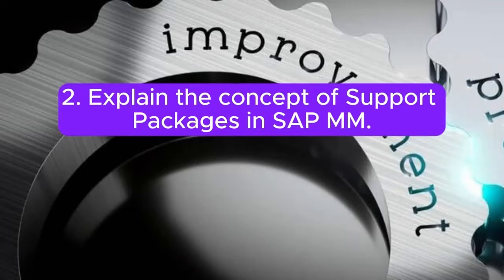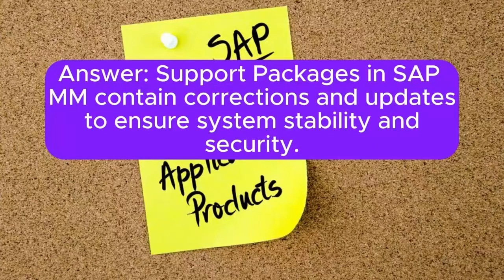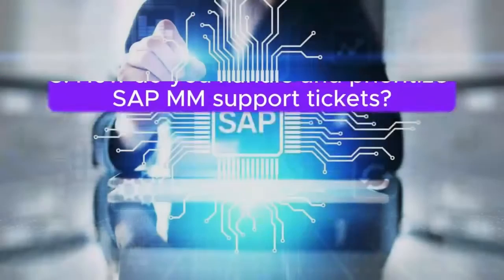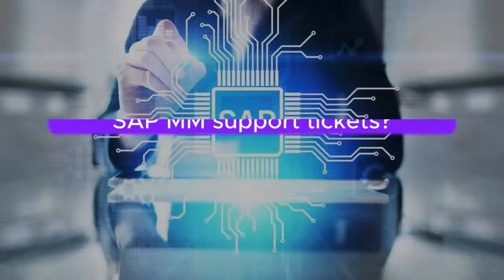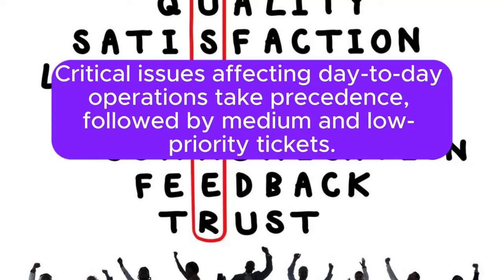Question 2: Explain the concept of support packages in SAP MM. Support packages in SAP MM contain corrections and updates to ensure system stability and security. They are regularly released by SAP and their implementation is crucial for system maintenance. Question 3: How do you handle and prioritize SAP MM support tickets? Support tickets are prioritized based on the impact on business processes. Critical issues affecting day-to-day operations take precedence, followed by medium and low-priority tickets.